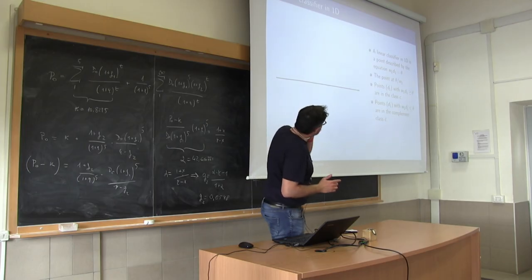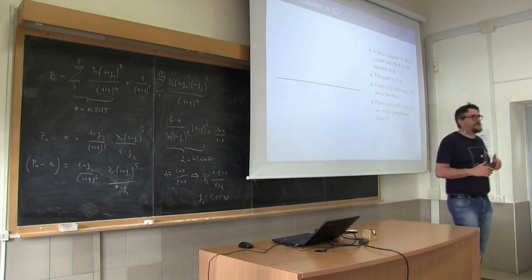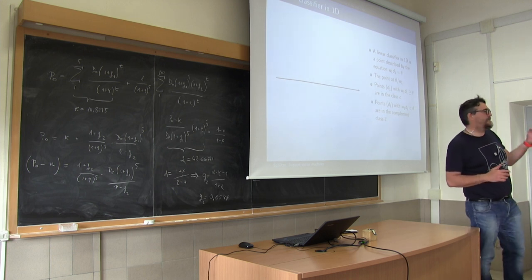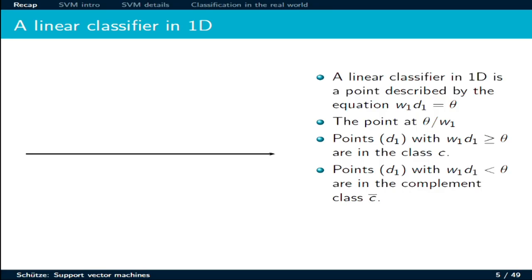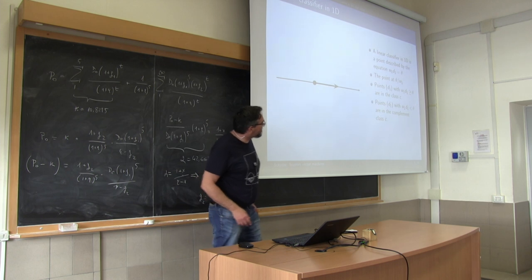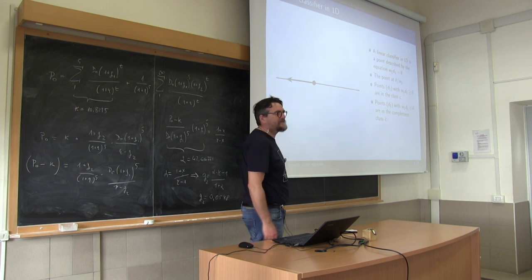More in general, a linear classifier requires the identification of a line, a point, a plane, a hyperplane, which allows you to distinguish among two regions — above or below this line, above or below this plane — for two classes. Basically, you identify one point. Everything on the right will be classified with class C, and what is on the left will be classified with C minus or C whatever.